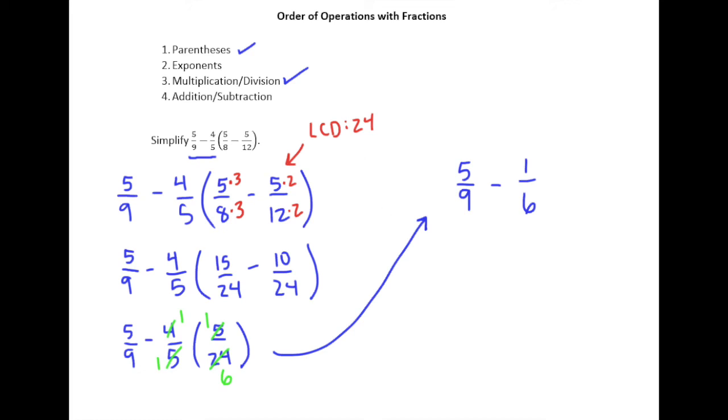Now 6 does not go into 9 evenly, so we try the next multiple of 9, which is 18. 6 does go into 18 evenly, so that means our LCD is 18.